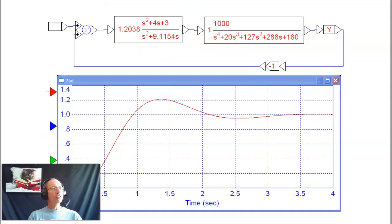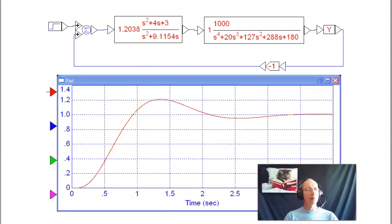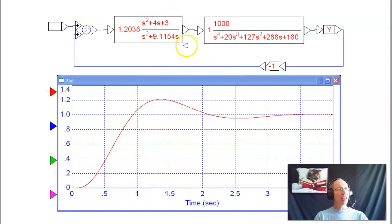In VisSim, I can check the response. And notice, here's my compensator, there's my plant, I've got 20% overshoot. That worked. No error. It's actually a little bit more than 20%.